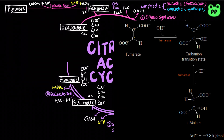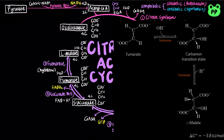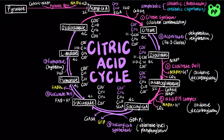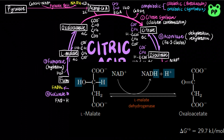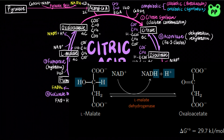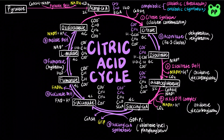Next, fumarate undergoes reversible hydration into L-malate by fumarase. In the last reaction of the citric acid cycle, L-malate is oxidized to oxaloacetate by L-malate dehydrogenase, which is coupled to the reduction of NAD+ to NADH. Oxaloacetate then combines with acetyl-CoA to start a new cycle.